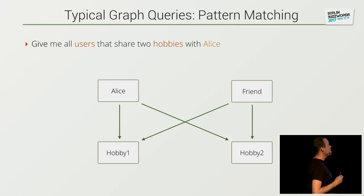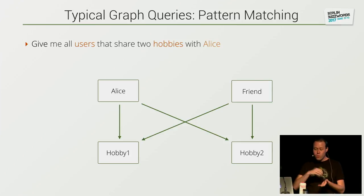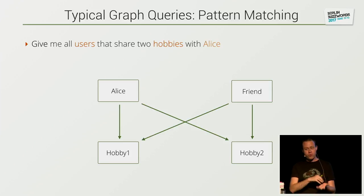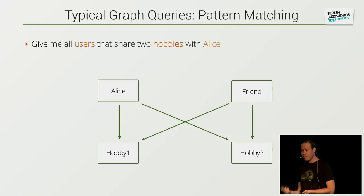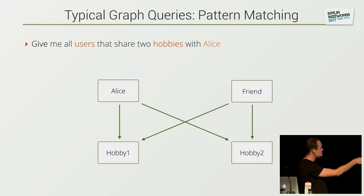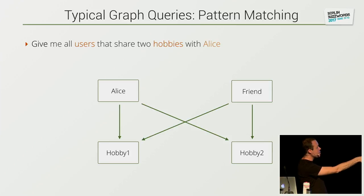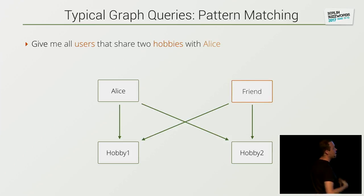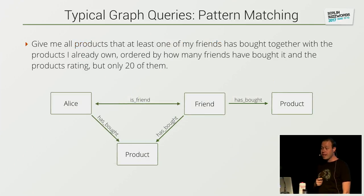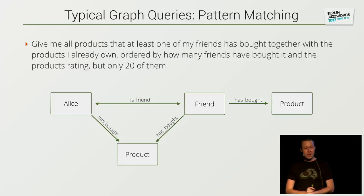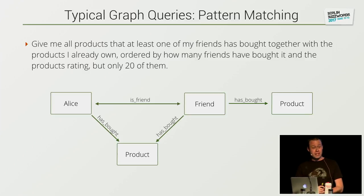The most typical graph queries are so-called pattern matching queries. You have a large graph stored in the database, and you define one subgraph — one pattern — that you would like to search for in the entire graph. The pattern could be: give me all users that share two hobbies with Alice. The pattern would be a fixed point which is Alice, a connection to one undefined hobby, another undefined hobby, and then a friend which has a connection to those two hobbies as well. You can make it more complex — recommendation systems: please give me all the products that one of my friends has bought, together with a product that I already own, because then it's probably a product I would buy as well.